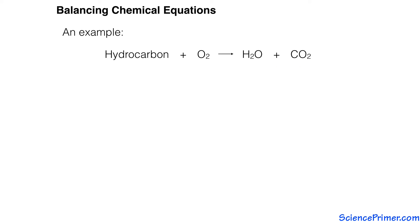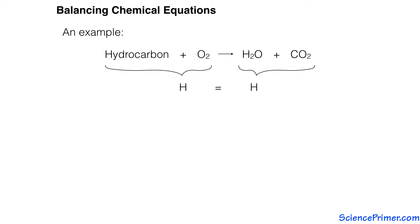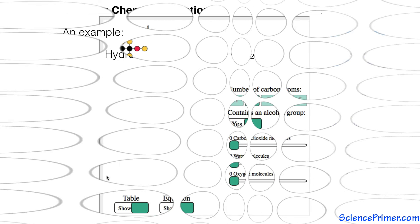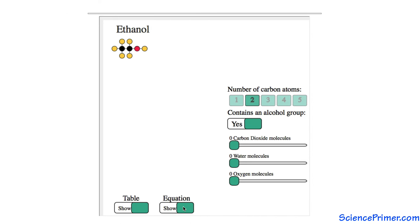For an equation showing the combustion of a hydrocarbon to be balanced, the number of carbon atoms in the reactants must equal the number in the products. The number of hydrogen atoms in the reactants must equal the number of hydrogens in the products. And the same applies for oxygen. The process of balancing an equation can be shown using the combustion of ethanol as an example.